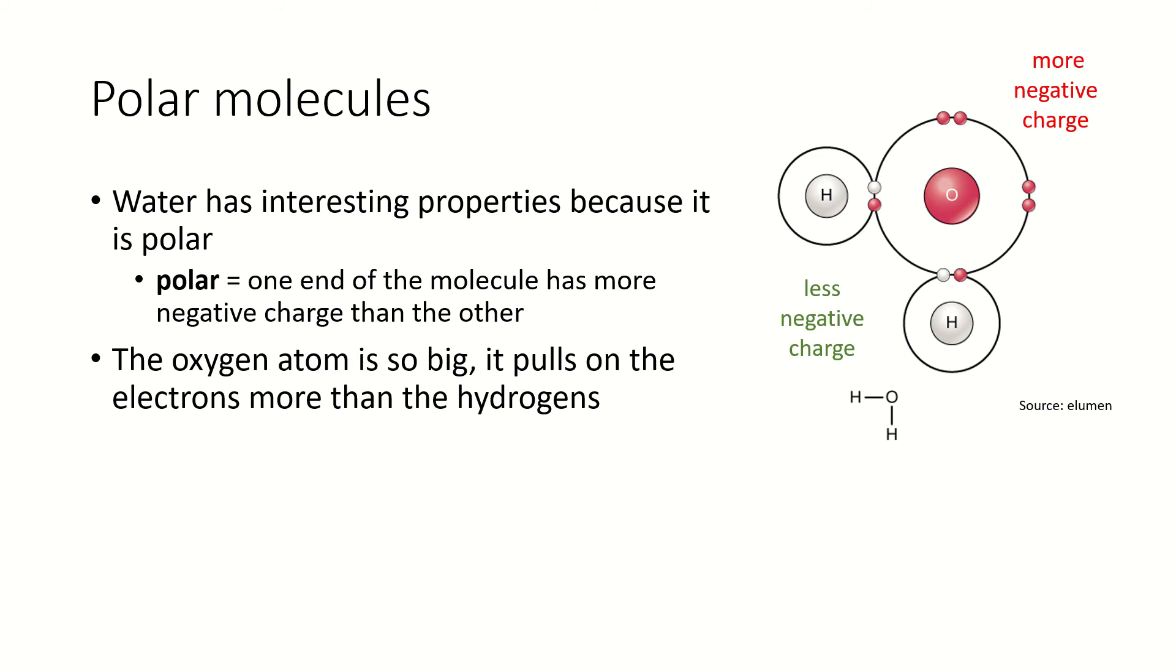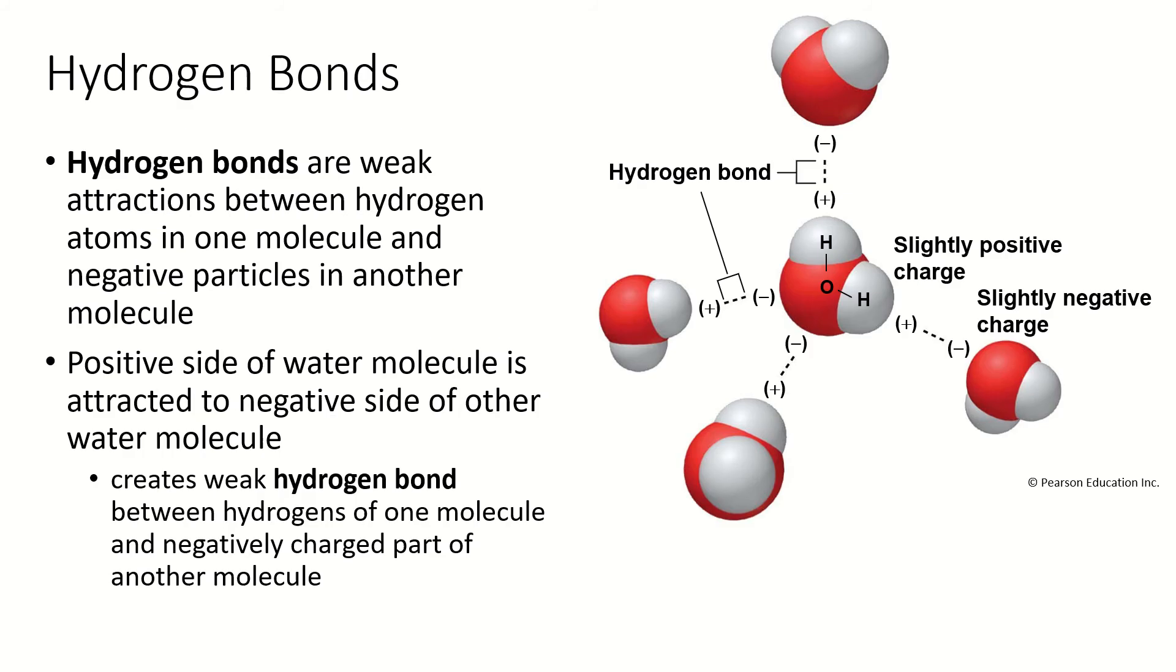Water is a polar molecule. And that means that one end of the molecule has more negative charge than the other. And that happens because the oxygen atom is so much bigger than the hydrogen atoms. Like it's huge compared to hydrogen. It's still tiny, but compared to the hydrogen, it's massive. And so the six protons inside this nucleus make a huge pull on this one little electron of the hydrogen. So there's more negative charge on one side of the water molecule than on the other. So we say it has a pull. It has a negative pull and a positive pull. The positive pull is not positively charged, just less negative.